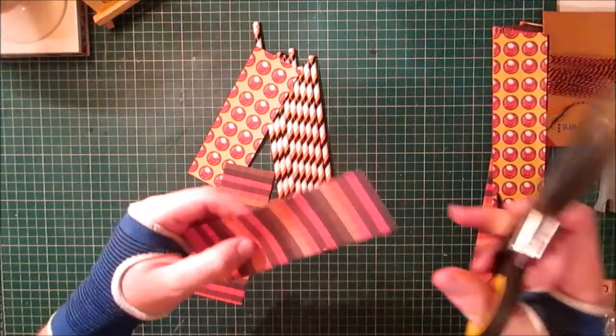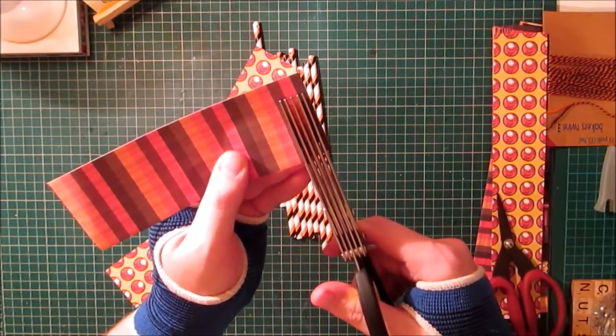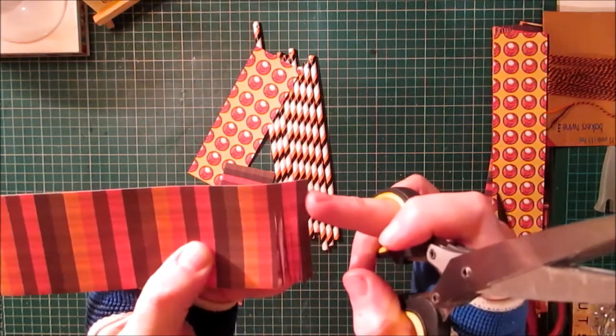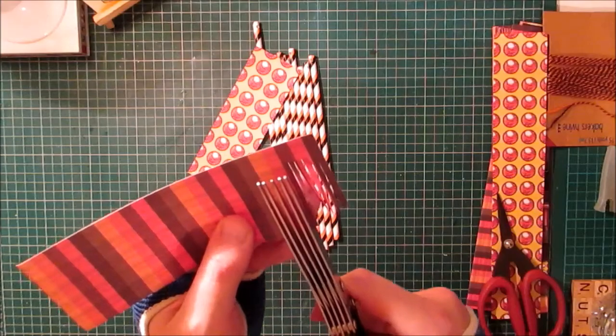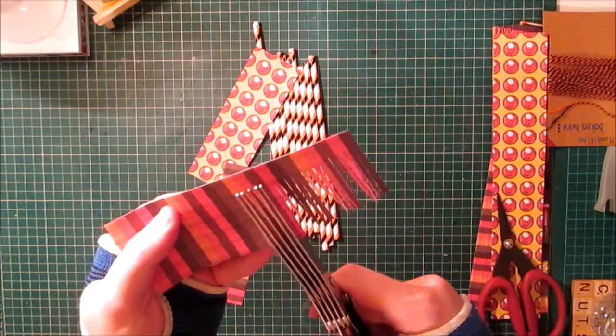Using the shredder scissors, I'm going to go up the paper so I'm left with about half an inch up. Now if you've got double-sided paper then great, use that.